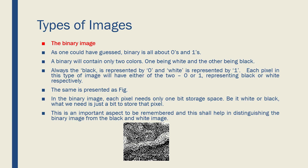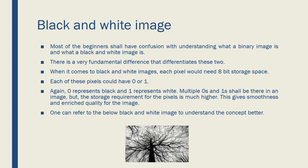A binary image will not be clear for you to understand what the image tries to convey. So what is the best option? I am going to talk to you about the black and white image. The black and white image is always confused with the binary image, and that confusion should not be there anymore. There is a fundamental difference between these two. When it comes to black and white, each pixel would need eight bits of storage space. Earlier we needed only one bit per pixel; now we need eight bits per pixel. Each pixel again could be only zero or one — zero is black, one is white. Multiple zeros and ones will come together to form an image, and all these pixels will need eight bits of storage space.